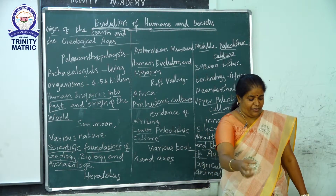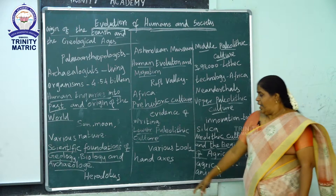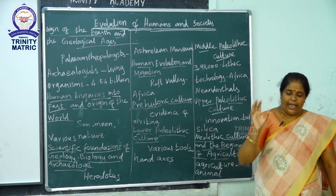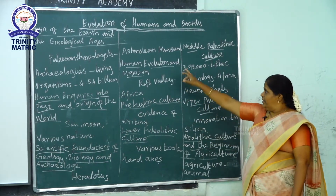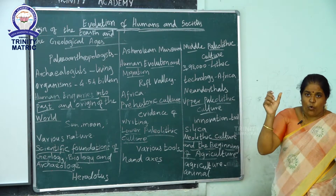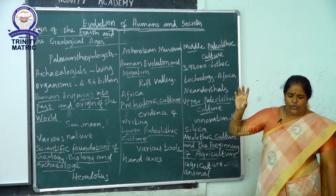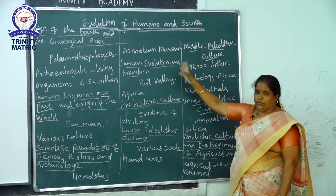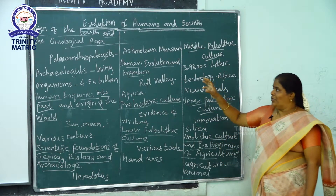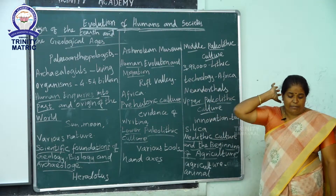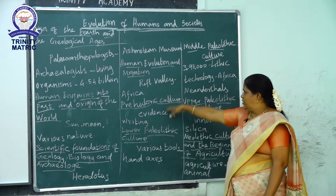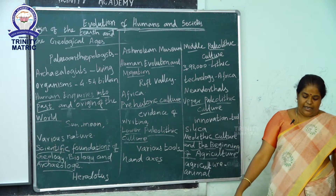Herodotus is the father of history. The Ashmolean Museum is the world's oldest museum, located at Oxford University. It holds evidence related to human evolution and migration.